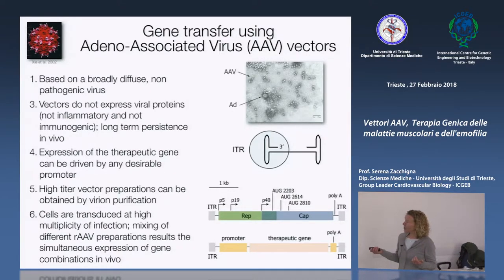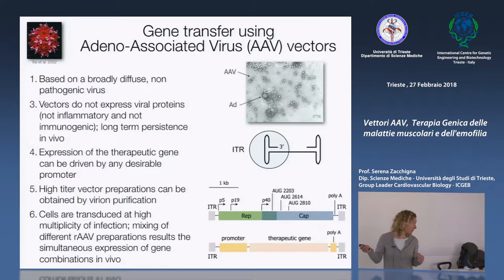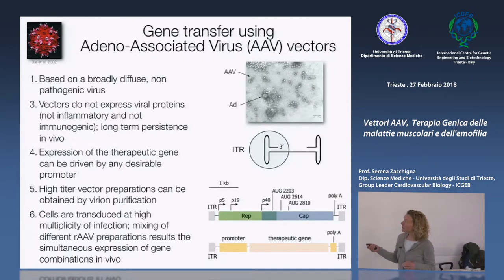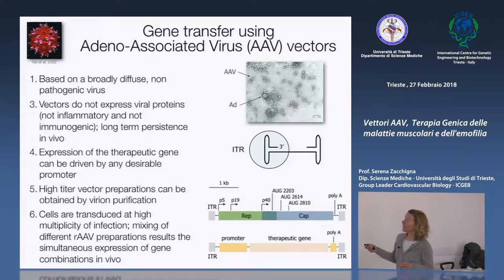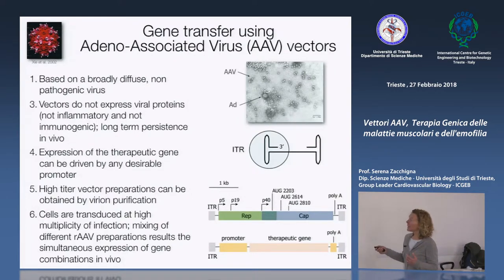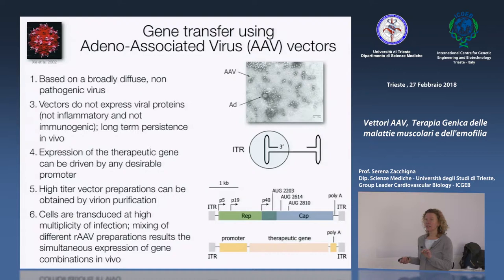Questi due geni sono inseriti tra due ITR — Inverted Terminal Repeats — che assumono una struttura a hairpin (forcina) e sono fondamentali per la replicazione virale e per una caratteristica unica di questa classe di virus: inserirsi in una specifica posizione all'interno del cromosoma 19 umano.